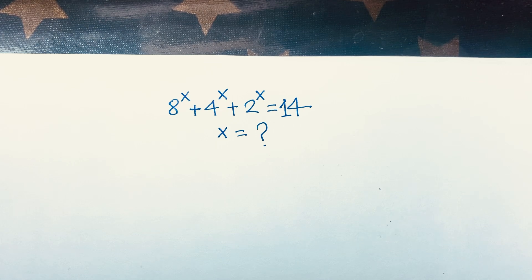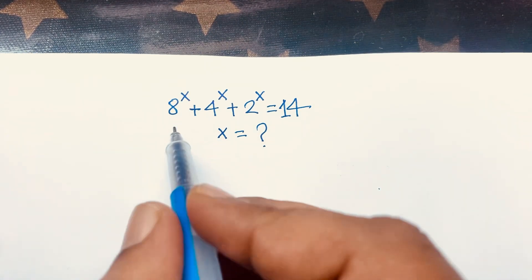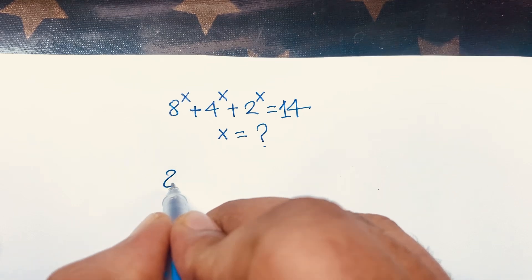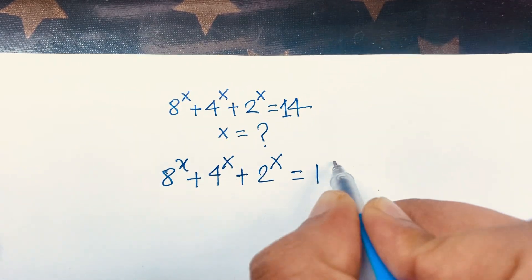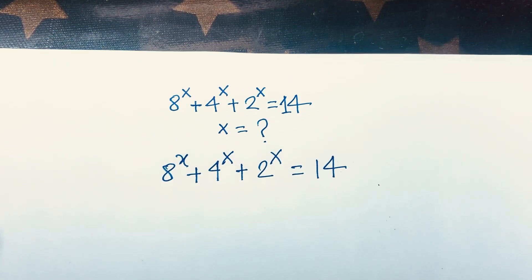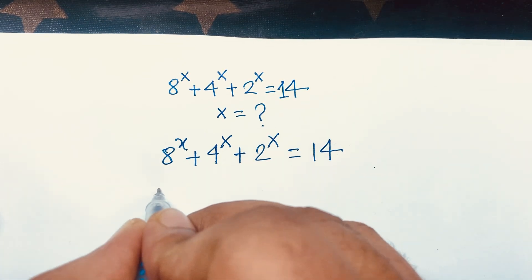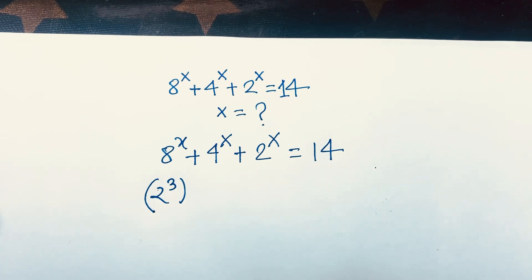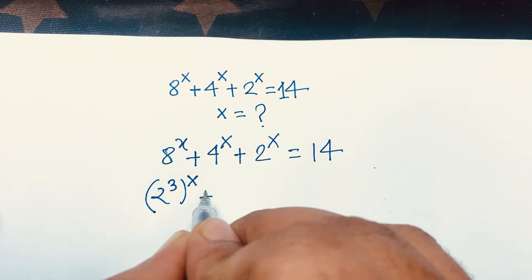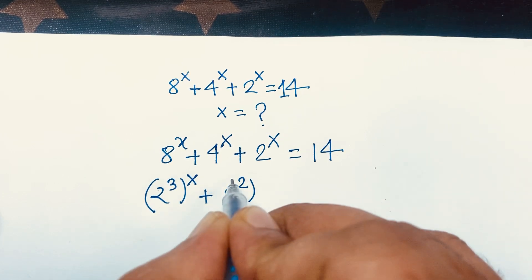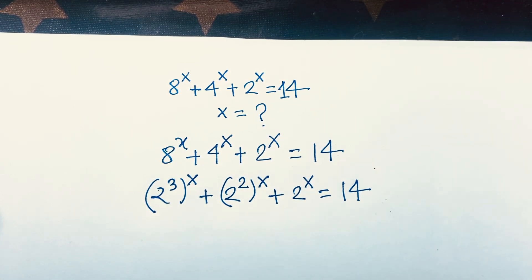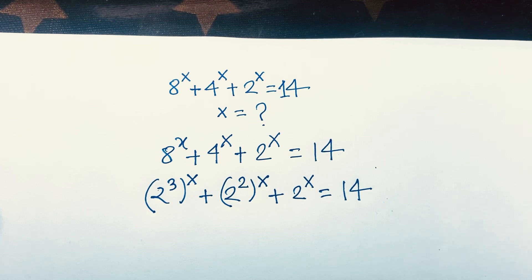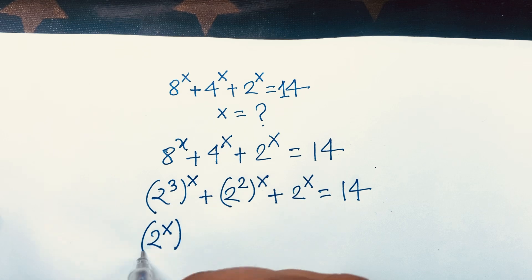But how to find out that the value of x is equal to 1? First of all, our question is 8 to the power x plus 4 to the power x plus 2 to the power x is equal to 14. We can say 8 to the power x is obviously 2 to the power 3 times x, because 2 to the power 3 is 8. And 4 to the power x is 2 to the power 2 times x. Then according to the exponential rules, it will be 2 to the power x, all to the power 3.